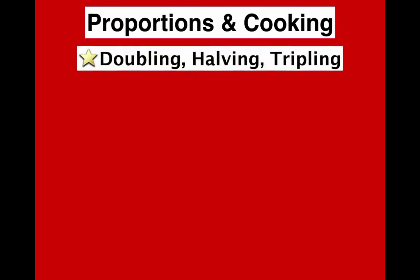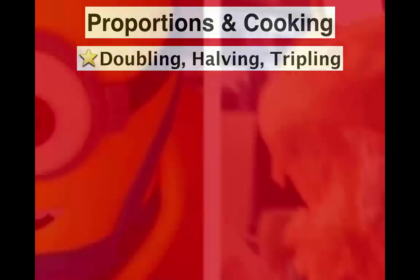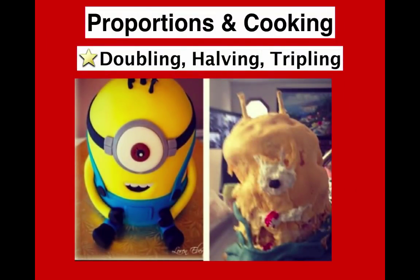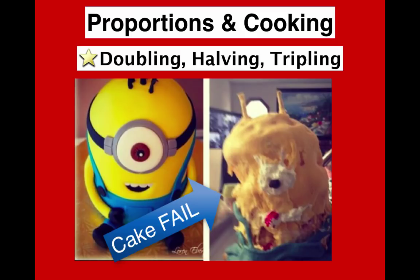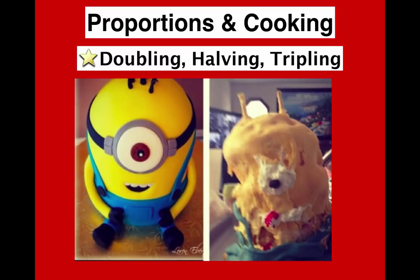Wrapping up this video on proportions and cooking — things to write down. Doubling, halving, and tripling is typical with recipes. Sometimes we cut something in half because not many people are eating, or we double and triple because we have lots of people. If you do not do it proportionally, things go wrong — like this minion cake that was supposed to look cute but turned out nothing like the recipe when proportions weren't followed. Things don't bake correctly or taste correctly. Proportions are super important. We will watch more videos on this. Hope it helped — see you in class. Bye!